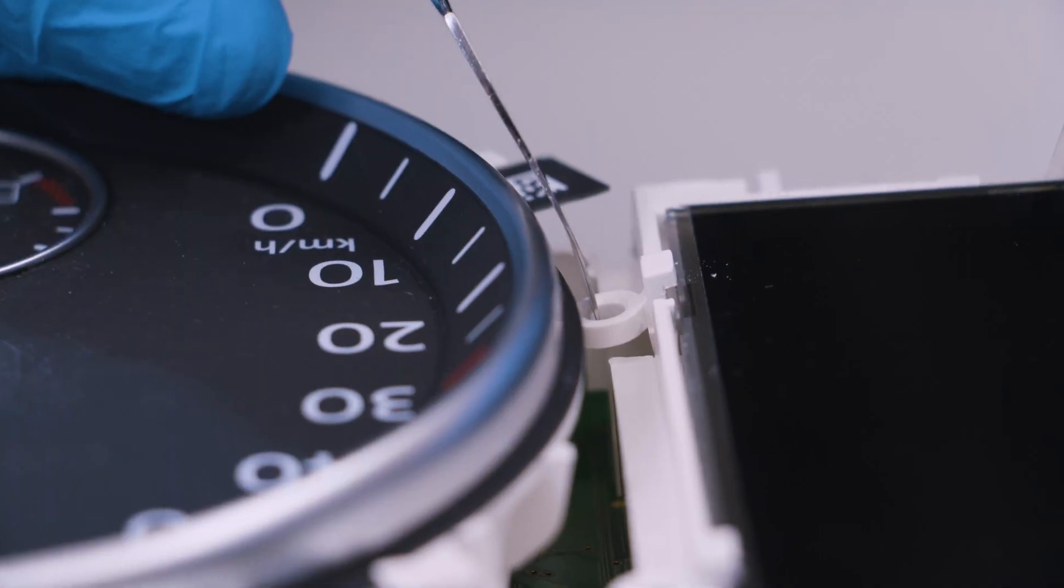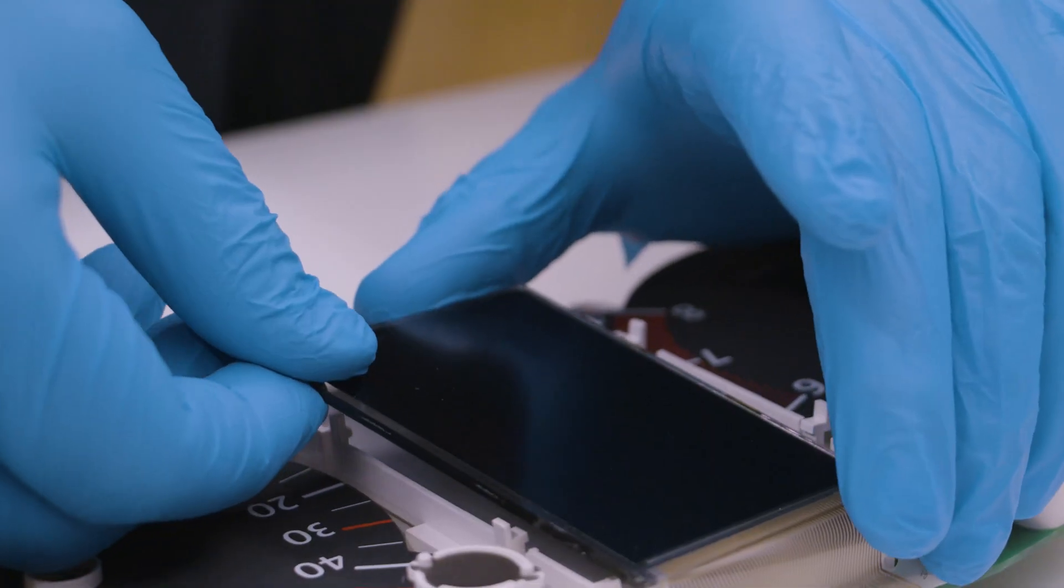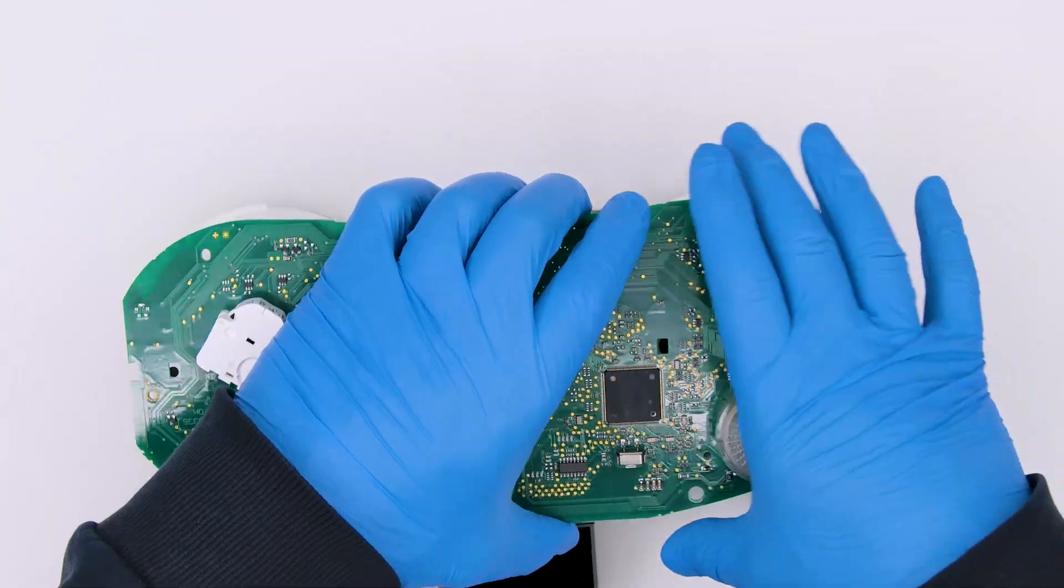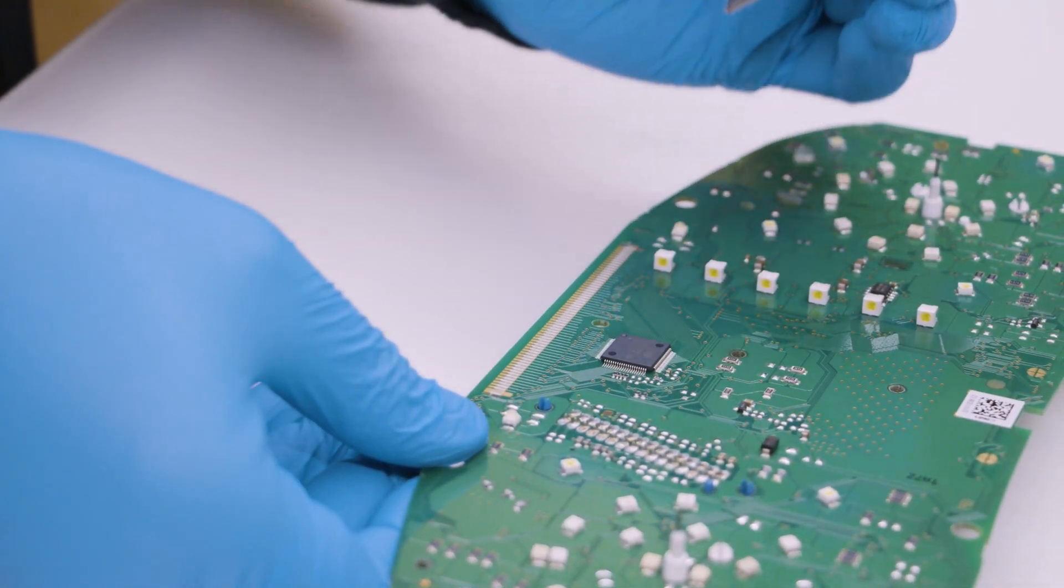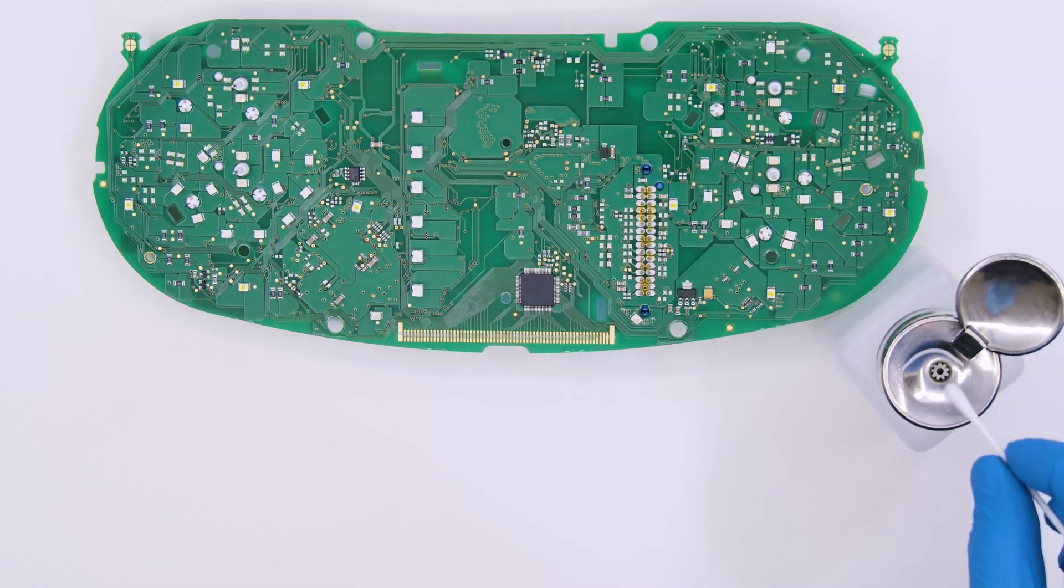With the head of the spudger and tweezers, unhook the display from the white plastic, then release the PCB as shown. Remove the display and clean the contacts with some solvent.